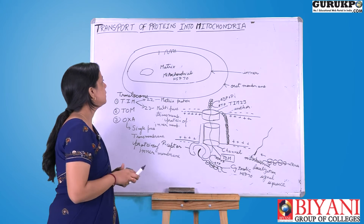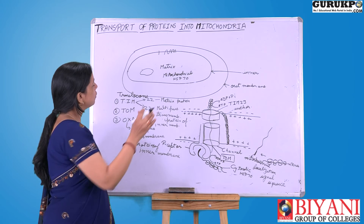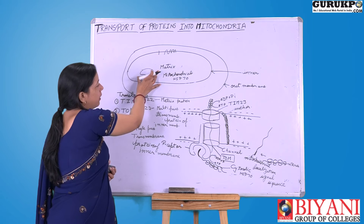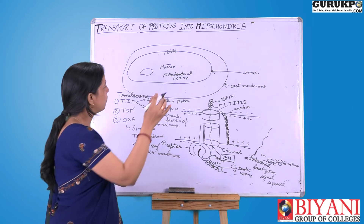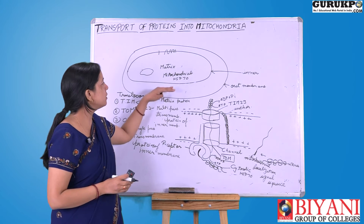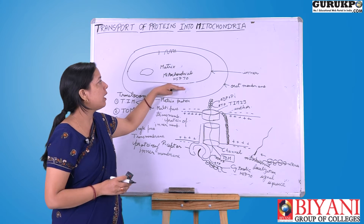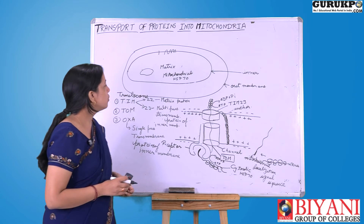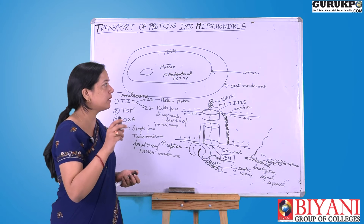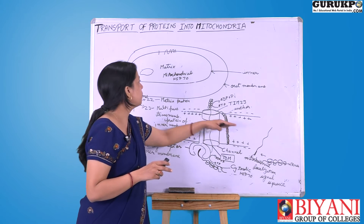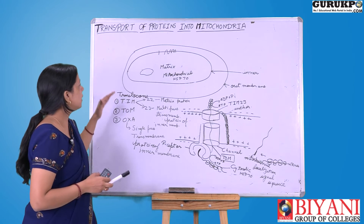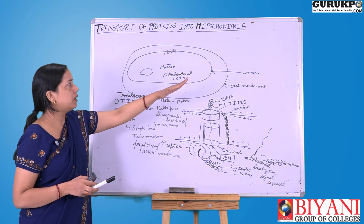Mitochondria is semi-autonomous because it contains its own DNA. Some of the proteins of mitochondria are synthesized within the mitochondria, whereas most of the proteins required in mitochondria are synthesized by the nuclear genome. Today I am going to discuss how proteins synthesized by the nuclear genome are transported into the mitochondria.